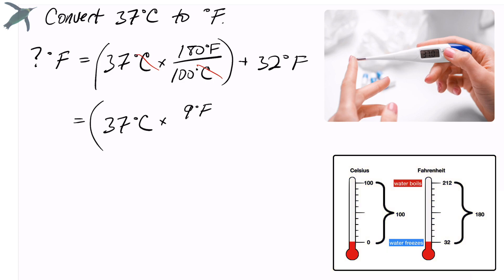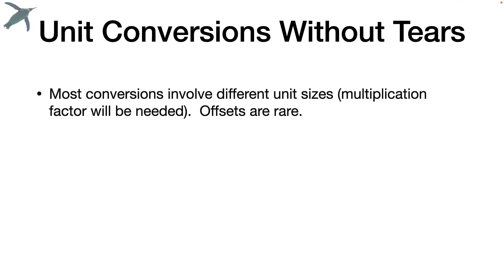Now I can actually simplify this. 180 over 100 is 9 fifths. And again, showing that the Celsius cancels. I do the math, I get 98.6 Fahrenheit.